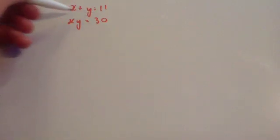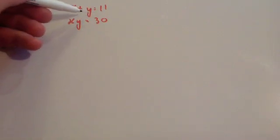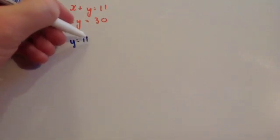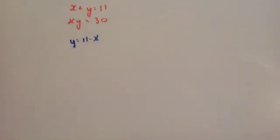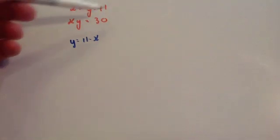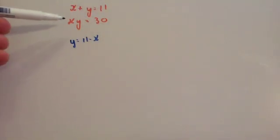Now a second example: x plus y equals 11, and xy equals 30. Let's again make x or y the subject of the linear equation. Let's make y the subject: take x away from both sides, giving y equals 11 minus x. We're now going to substitute that into the second equation.